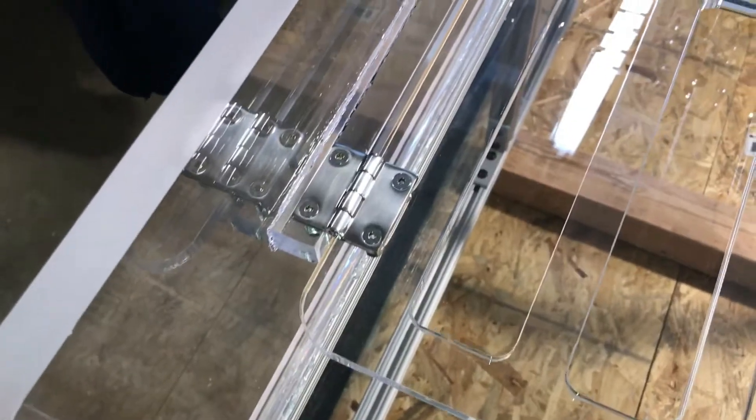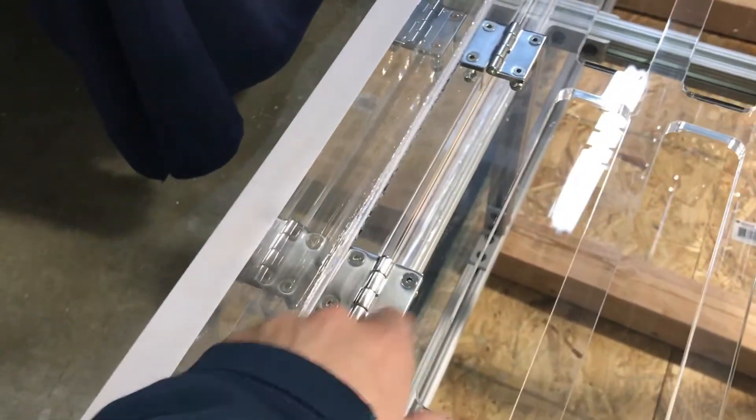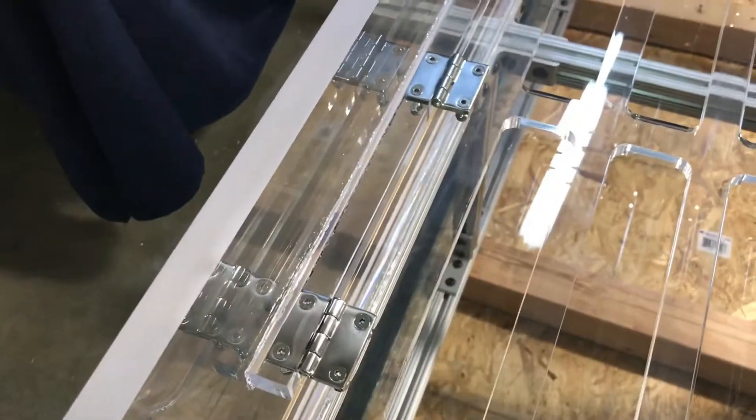Here we have three hinges. I'm not sure if we talked about two or three. I think three is better because it'll give you less twisting momentum. Every door has that. You have three hinges on this one as well, and three hinges on this one as well.